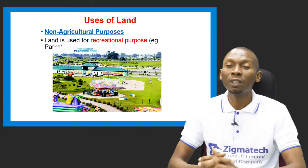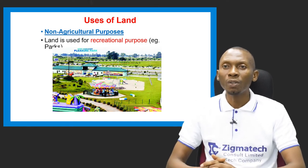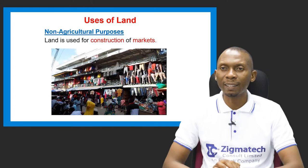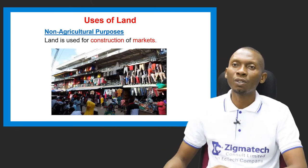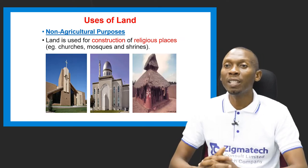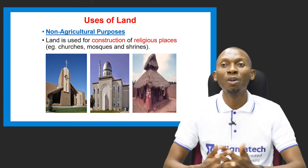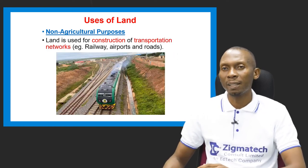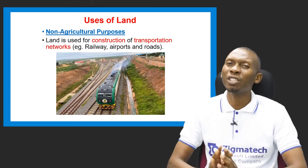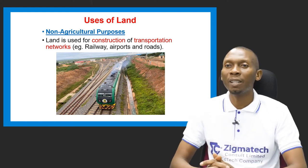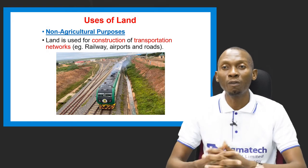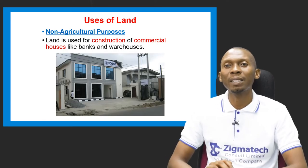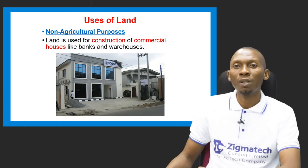Land is used for recreational purposes such as parks, and for the construction of markets where buying and selling takes place. It can be used for religious places of worship like churches, mosques, or shrines. Land also supports transportation networks including railways, airports, and roads, as well as commercial buildings like banks and warehouses.